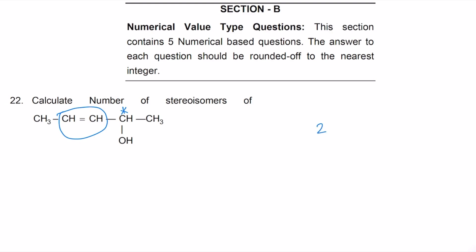The number of stereoisomers is equal to 2 to the power n. Here the n value is equal to 2, and therefore the number of stereoisomers here is 4 isomers.